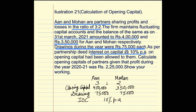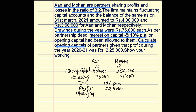What is given to us is the closing capital. We need to calculate the opening capital of the partners. The profit during the year is 2,25,000 — this is the profit transferred from P&L to P&L Appropriation. Please remember, IOC is not yet subtracted from this profit. What we need to calculate is the opening capital of both Aan and Mohan.